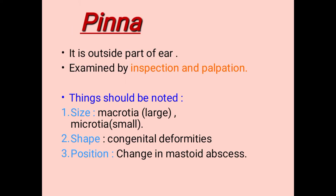First, the pinna — it is the outside part of the ear, examined by inspection and palpation. Things to note here are size, shape, and position of the pinna. In size: macrotia means large in size and microtia means small in size. In shape: congenital and acquired deformities, such as from injury and cauliflower ear. In position: changes in relation to the mastoid.